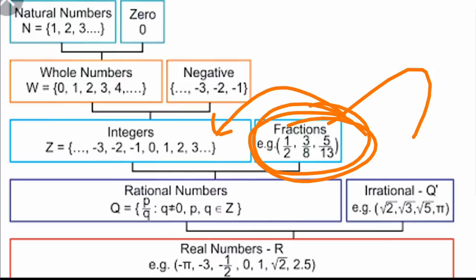If you have a number, you can say it is a rational number. If you have a positive or negative number, you can express it. If the fraction is left, you can say it is a fraction number.